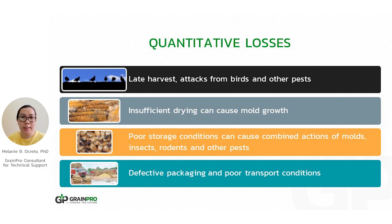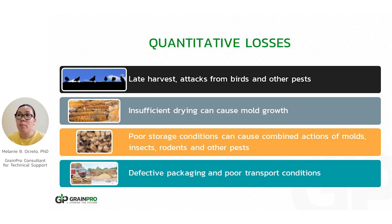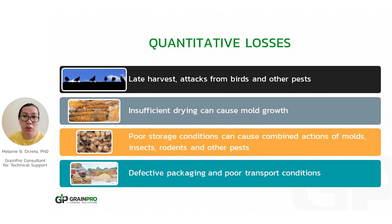What are the causes of these losses? We have late harvest, which results in attacks from pests like birds and rodents. We have to harvest our crops at an optimum time and period to prevent these pest attacks. For drying, especially with grains, we have to reach the optimum moisture content that is safe for storage. If moisture is high and not safe for storage, it would allow molds to grow. Poor storage conditions are also a cause of quantitative loss.